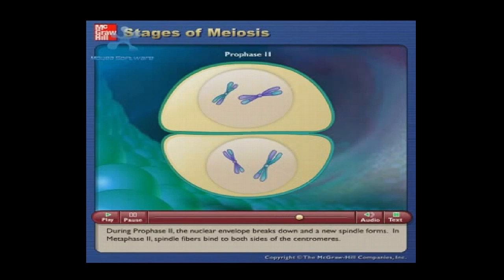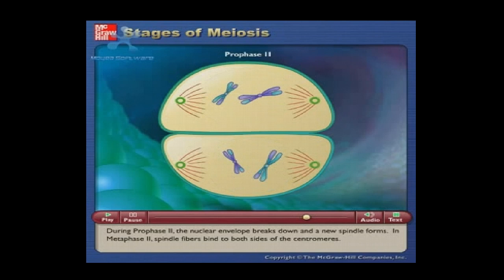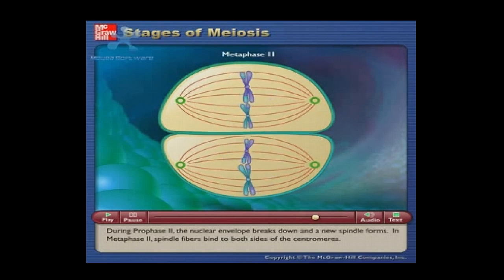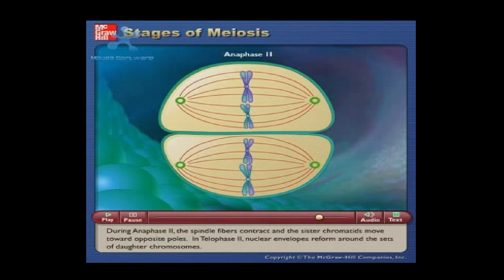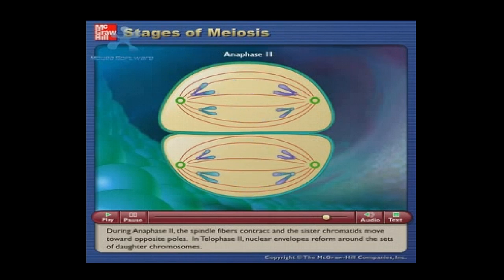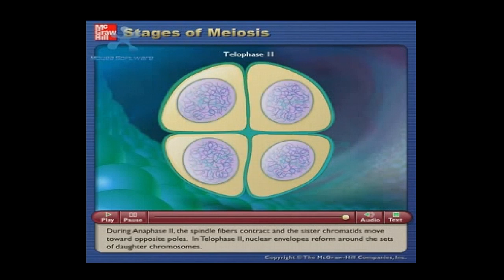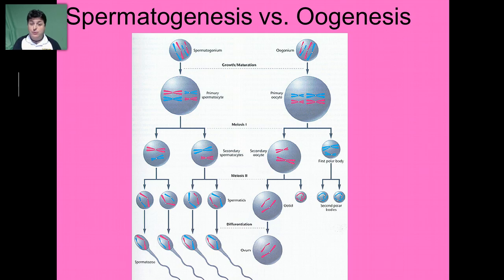During prophase II, the nuclear envelope breaks down and a new spindle forms. In metaphase II, spindle fibers bind to both sides of the centromeres. During anaphase II, the spindle fibers contract and sister chromatids move toward opposite poles. In telophase II, nuclear envelopes reform around the sets of daughter chromosomes. At the end of meiosis, we end up with four haploid gametes.